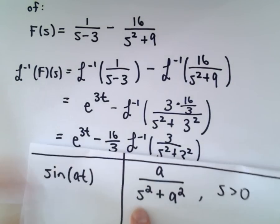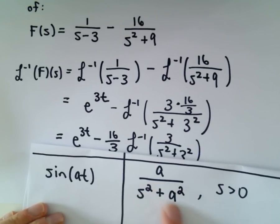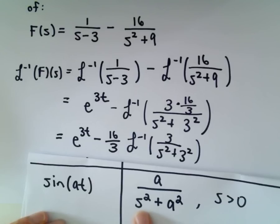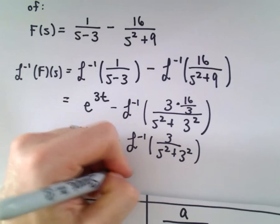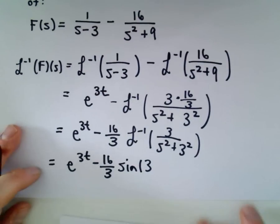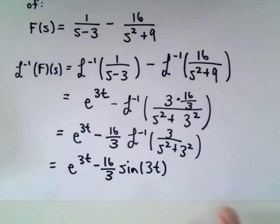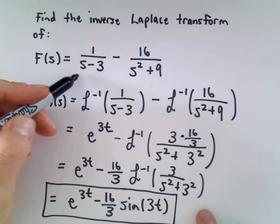Now we get what we need because we just use our formula. We've got 3 on top, we've got 3 squared on the bottom, we have our variable squared or s squared. So it says we'll get sine of the number in the numerator, which is going to be in this case just 3, and then we multiply that by t.